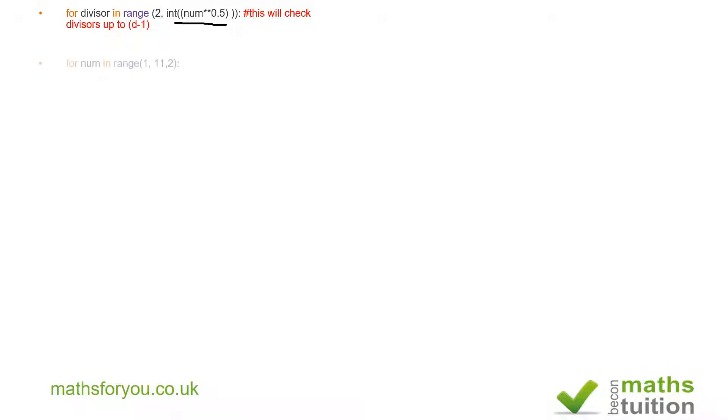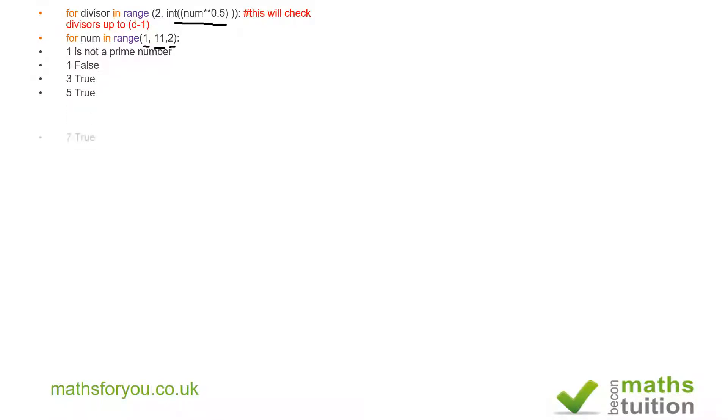Now let's run the code. Starting from 2 as the first divisor up to the square root of the given number. We find prime numbers between 1 and 11, not including 11, in steps of two — ending up with the result. As expected, one is not a prime number.